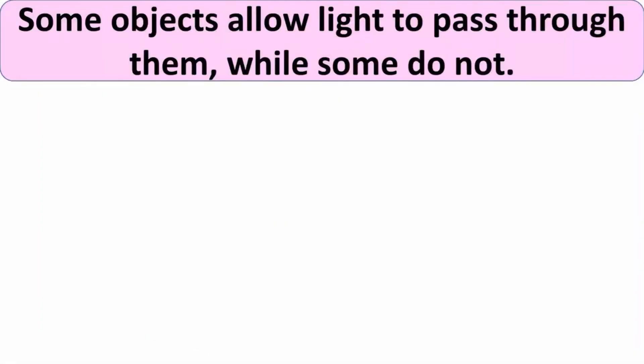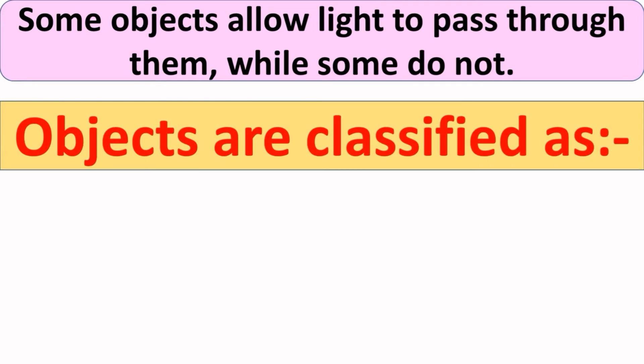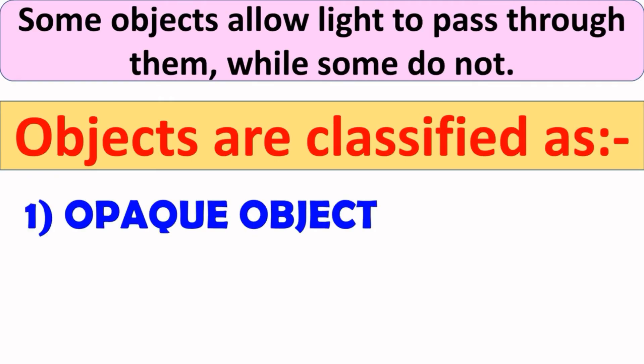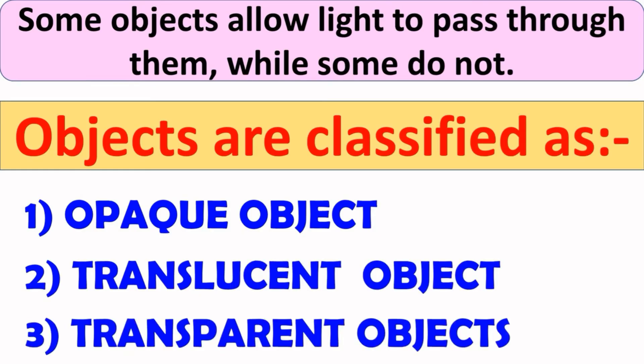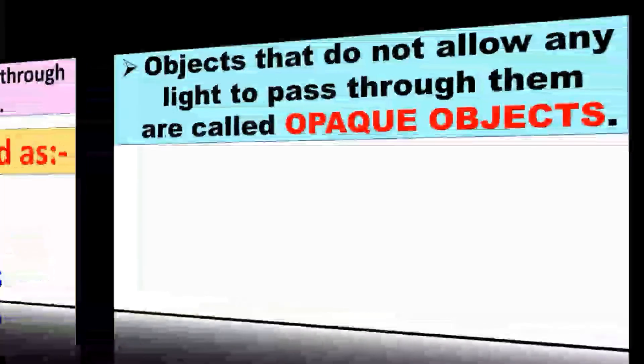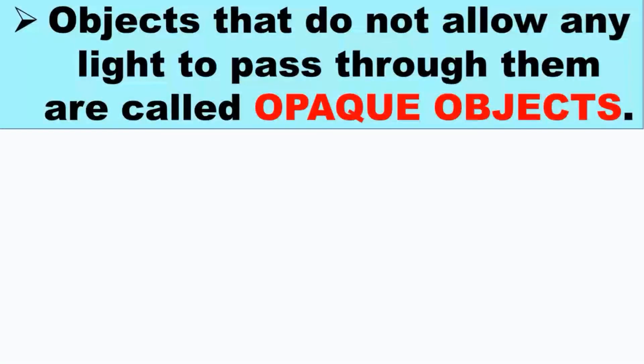There are some objects that allow light to pass through them, while some do not. And because of this, objects are classified as opaque object, translucent object, and transparent object. So, first we will see what are opaque objects.